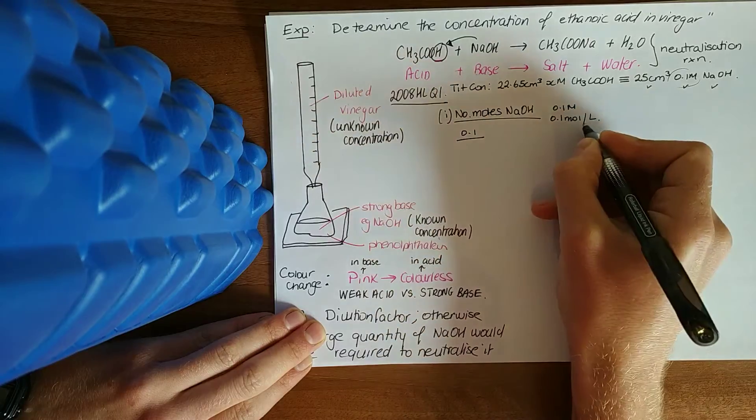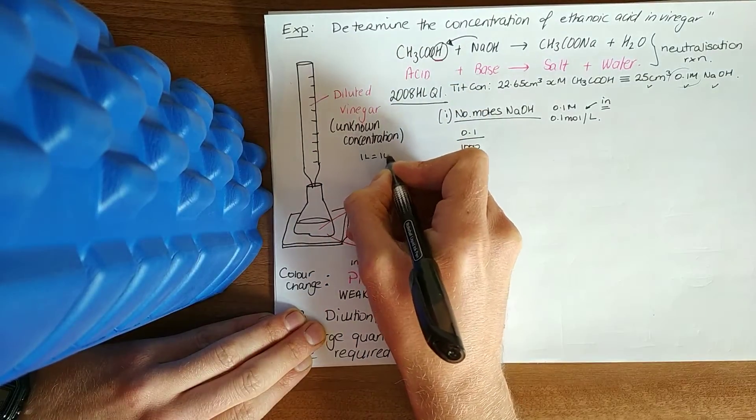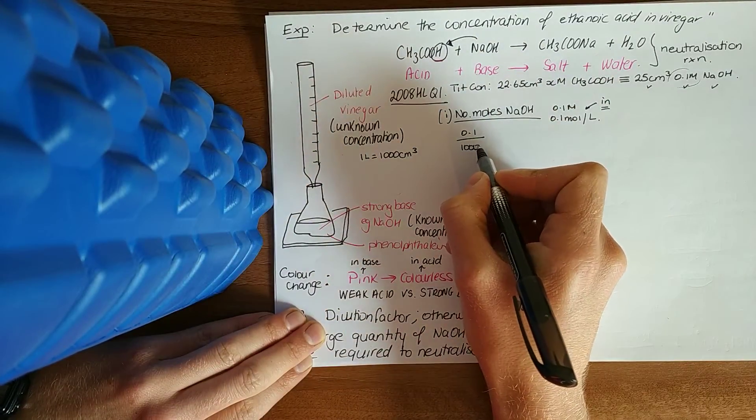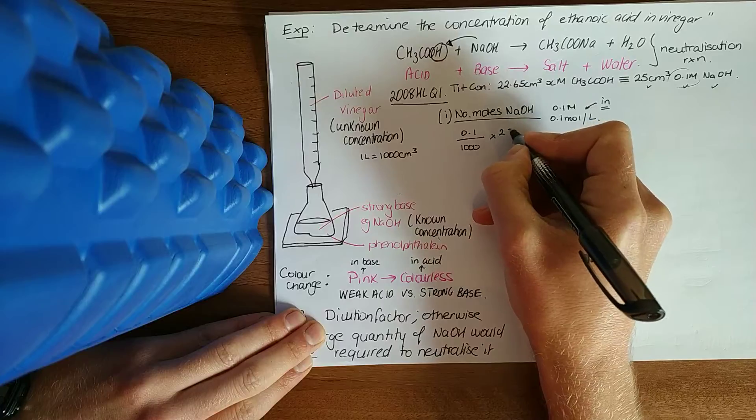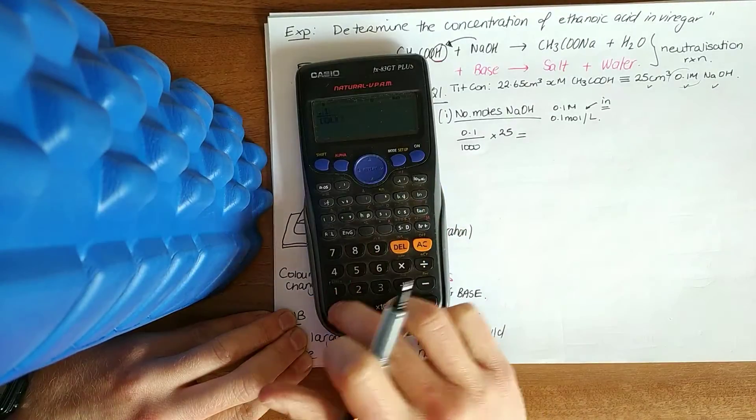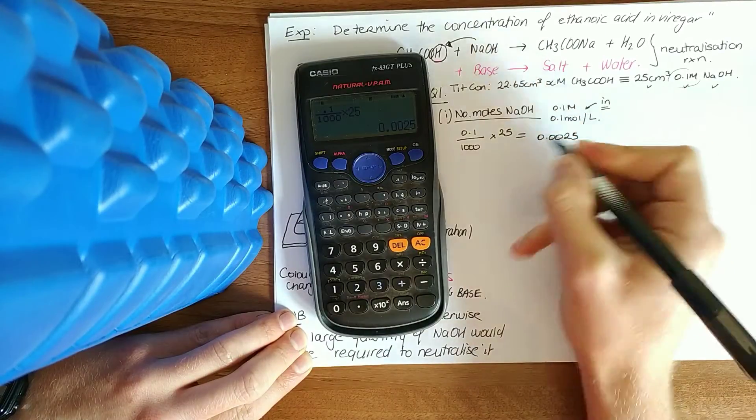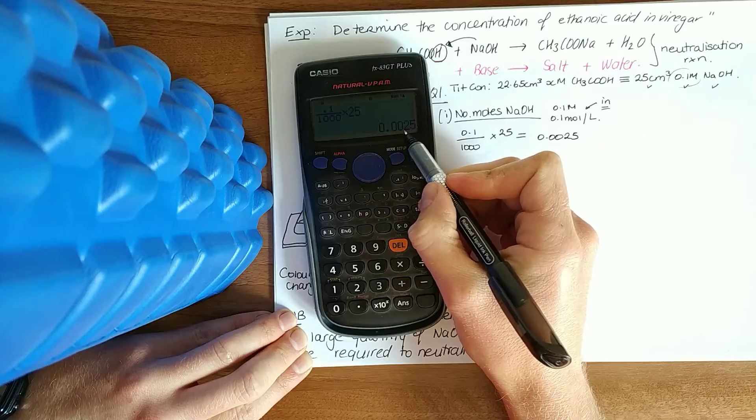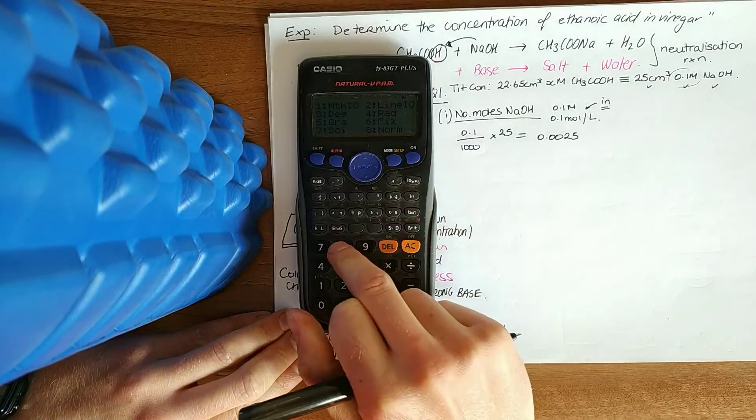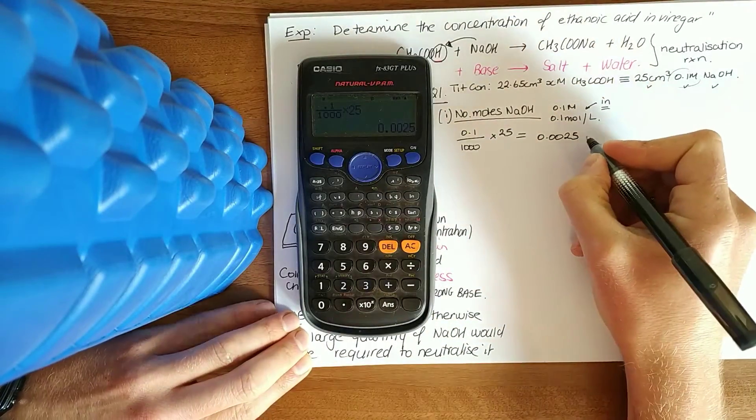Once I see that big M, 0.1M, that means 0.1 moles per liter. How do we say that in math? 0.1 in that slash there means N over a thousand, because one liter equals a thousand centimeters cubed. So 0.1 over a thousand, how much do we use? 25. So 0.1 over a thousand times by 25 equals 0.0025, or 2.5 times 10 to the minus three. If you want to get rid of scientific notation, shift mode eight for normal and then two, and it gives you that nice number.